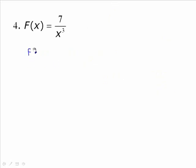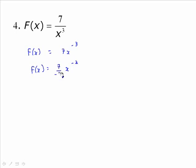Everything else goes as we have typically done for differentiation. So 7 over x to the 3: we would write it as 7x to the negative 3, and then the regular rule still applies. Add 1 on and you get x to the negative 2, so that's 7 divided by negative 2 — your exponent becomes your denominator — plus c. So little f of x is equal to negative 7 over 2 x to the negative 2 plus c. You could also write that as negative 7 over 2x squared.